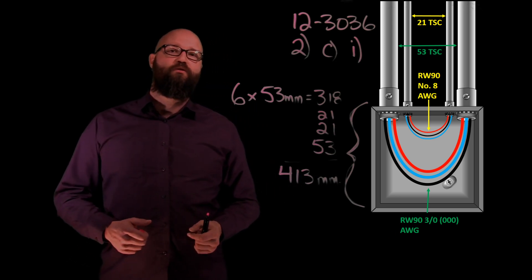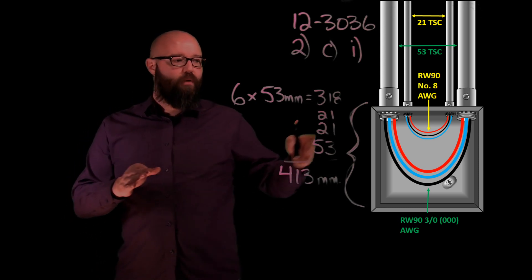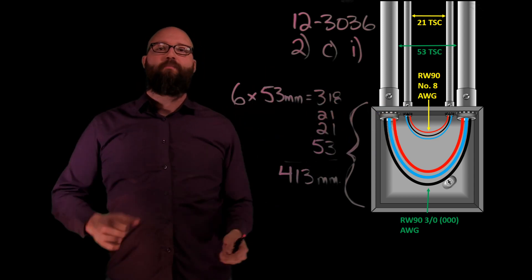What we're concerned with is those 53 trade size conduits. We want to make sure that we have enough distance in between them that when my conductors do make that U-bend, again we have a proper bend radius in there.